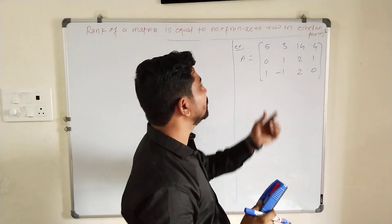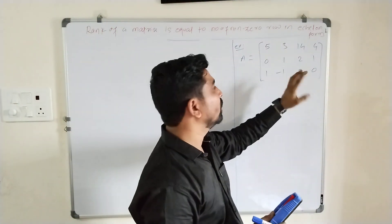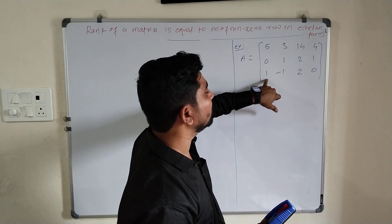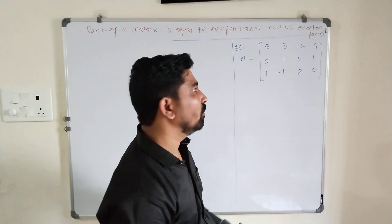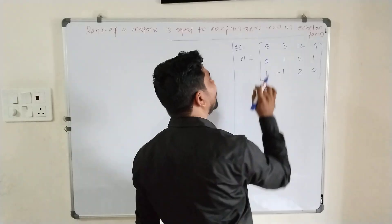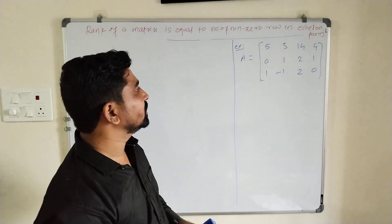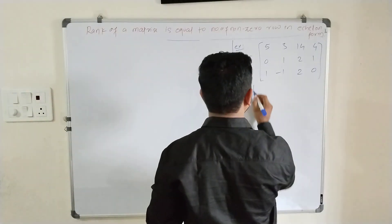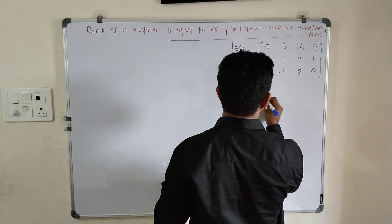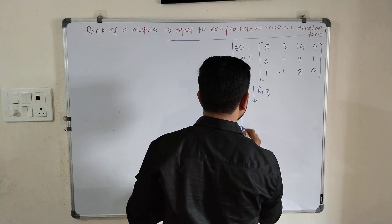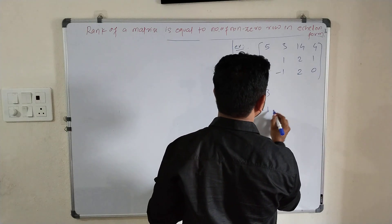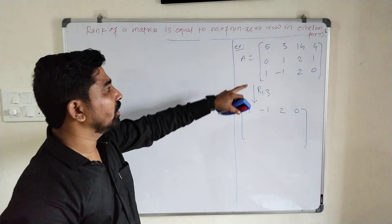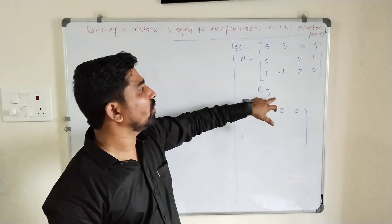Coming to row R2, the first non-zero number from the left is 1 — no problem. Coming to row R3, the first non-zero entry from the left is also 1. So I want to make the leading entry of R1 equal to 1. Can I swap row R1 and R3? If I swap R1 and R3, I get the first row as: 1, -1, 2, 0.